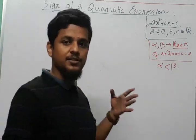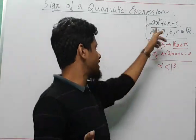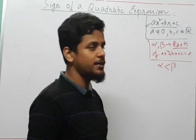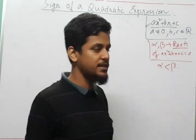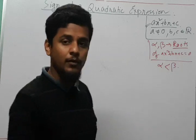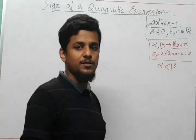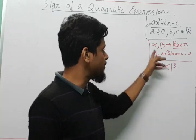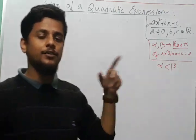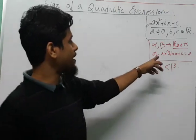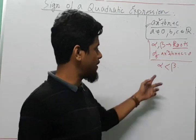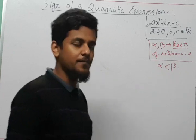Before we begin, our assumption as always: we'll take the quadratic expression ax² + bx + c, where a is not equal to 0 and b and c belong to the set of real numbers. One extra assumption we'll take is that alpha and beta are the roots of the quadratic equation ax² + bx + c = 0, and we'll assume that alpha is less than beta.